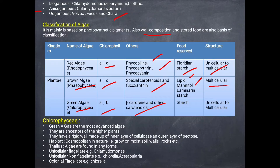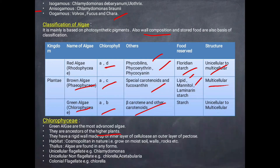Chlorophyceae, called green algae, is the most advanced algae and is ancestral to higher plants. There is a rigid cell wall with two layers — the inner layer is cellulose and the outer layer is pectin. The habitat is cosmopolitan — they are found on wet soil, rocks, walls, etc. Forms include unicellular flagellate (Chlamydomonas) and unicellular non-flagellate (Chlorella, Acetabularia).